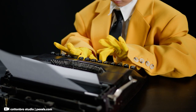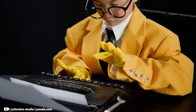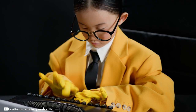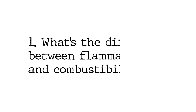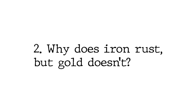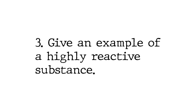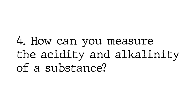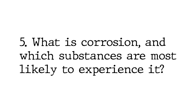Here are a few questions to test your understanding. Try answering these on your own or with a friend. First, what's the difference between flammability and combustibility? Second, why does iron rust but gold doesn't? Third, give an example of a highly reactive substance. Fourth, how can you measure the acidity or alkalinity of a substance? And finally, what is corrosion and which substances are most likely to experience it?